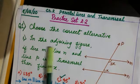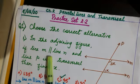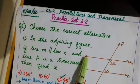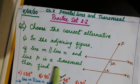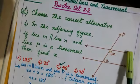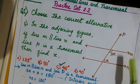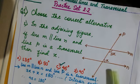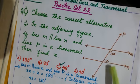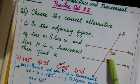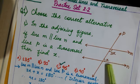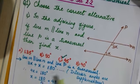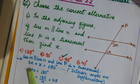In the adjoining figure, if line m is parallel to line n and line p is a transversal, then find x. In the figure, line m and n are parallel lines and line p is a transversal. There are two angles — they are interior angles because they are inside the two parallel lines.